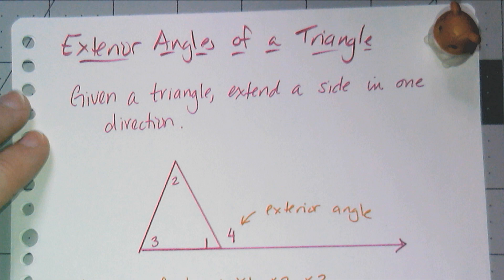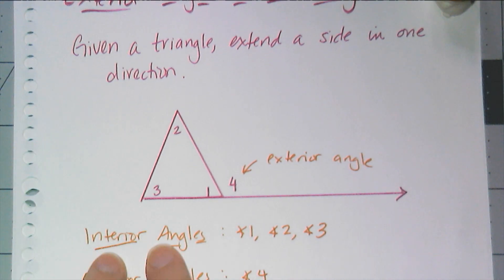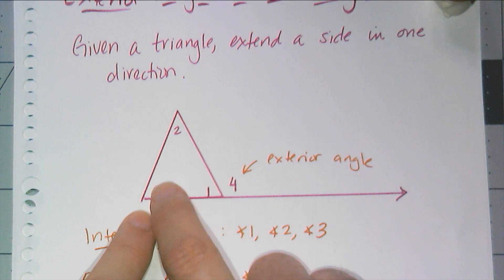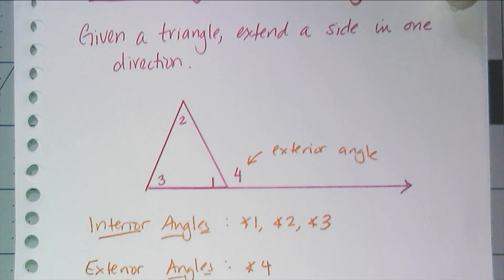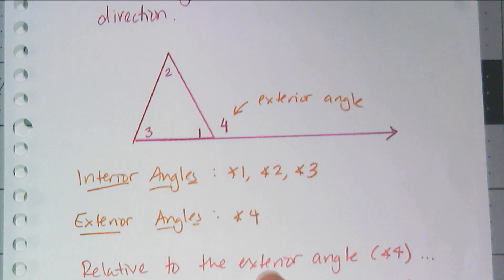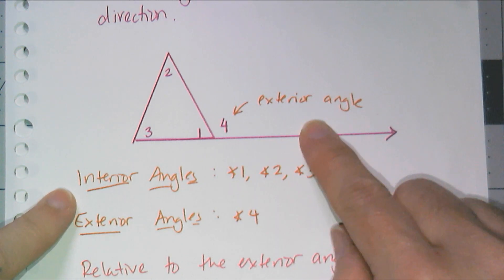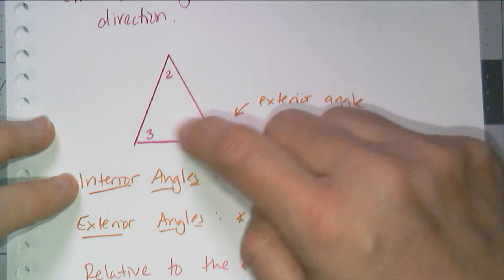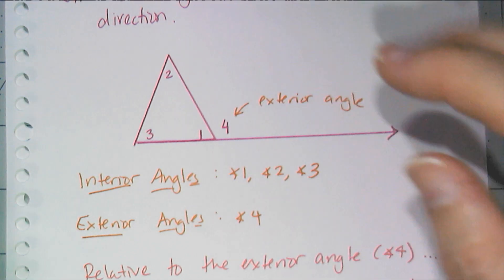To throw some vocabulary in there — interior angles are the angles inside of a triangle. So angles one, two, and three are interior angles. Angle four is the exterior angle that I just drew. Now angles one, two, and three in relation to four have a special name.